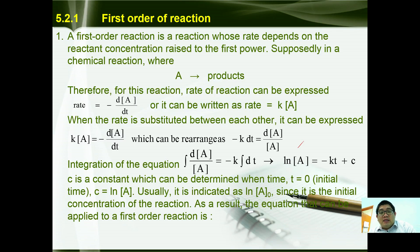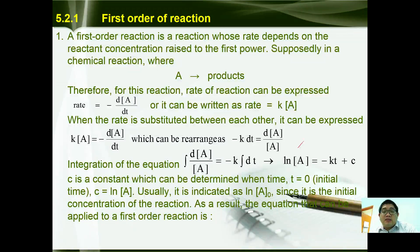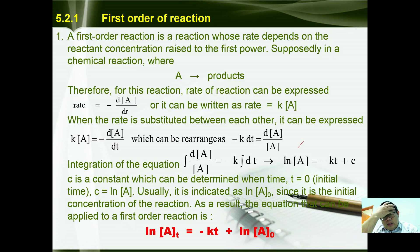Integration of the equation gives ln[A] equals negative kt plus c, where c is a constant determined at time t equals zero. At t equals zero, this gives the initial concentration indicated by [A]₀. Substituting c with ln[A]₀, we have ln[A]t equals negative kt plus ln[A]₀. This is the integrated rate equation for the first order reaction.